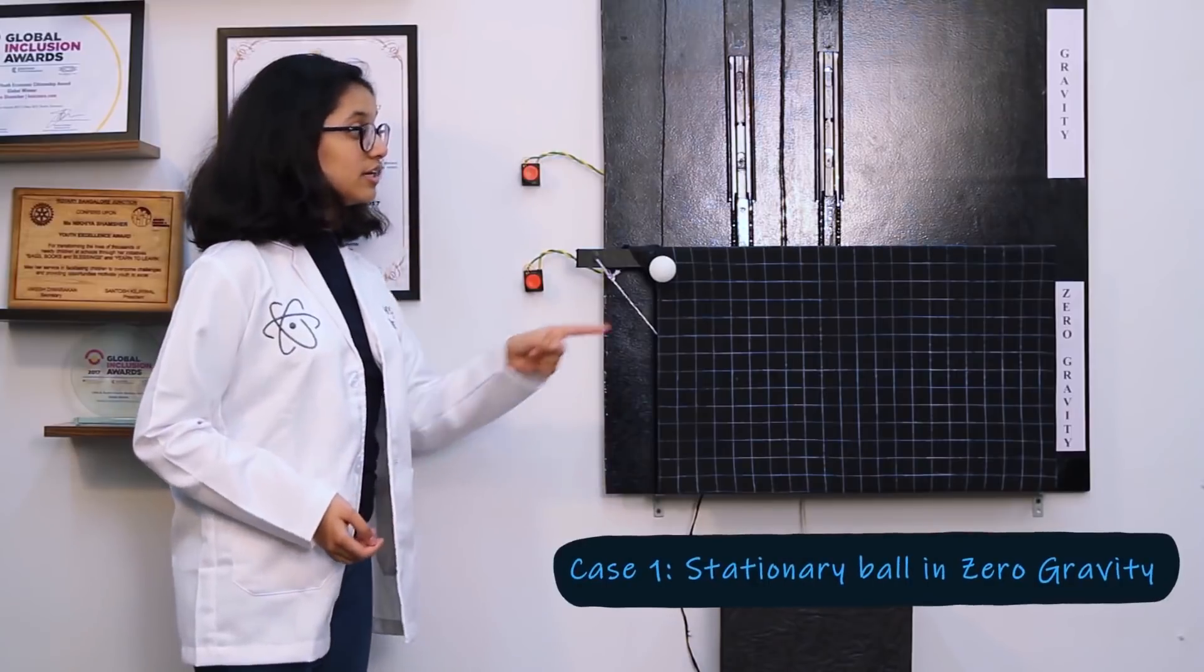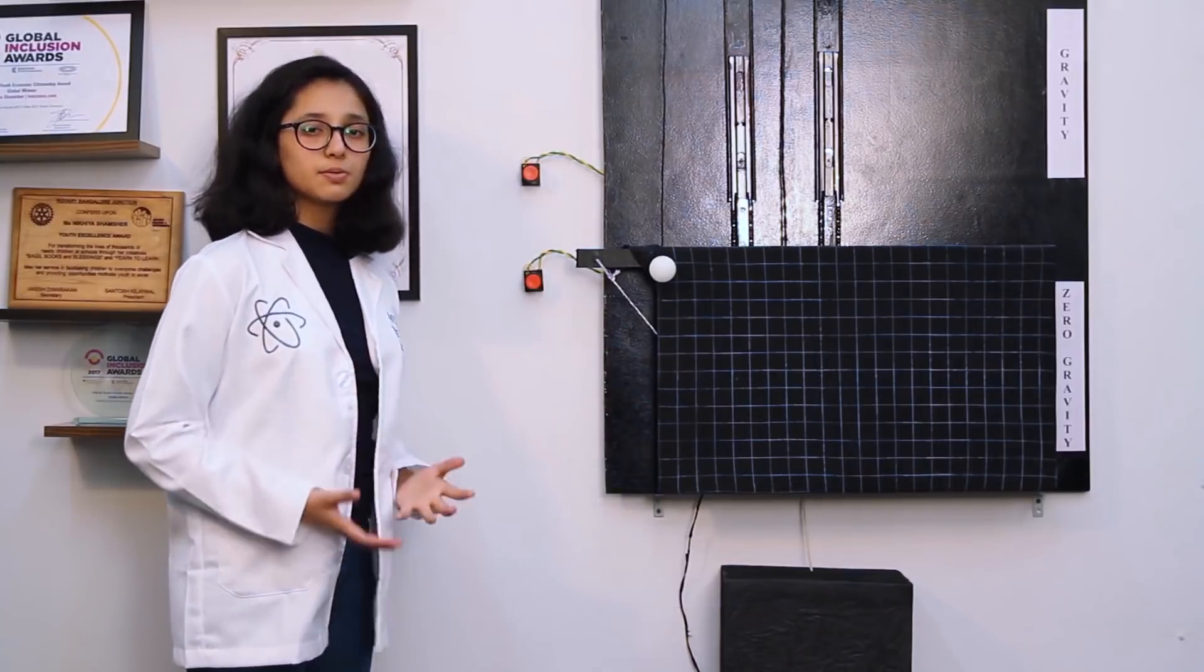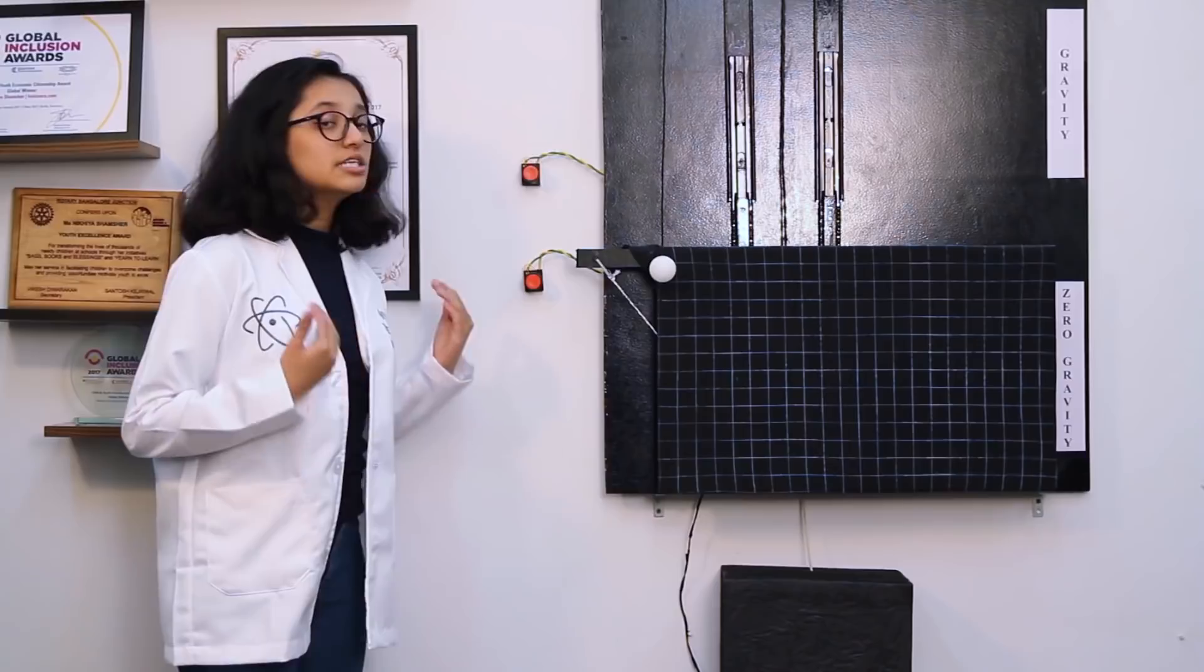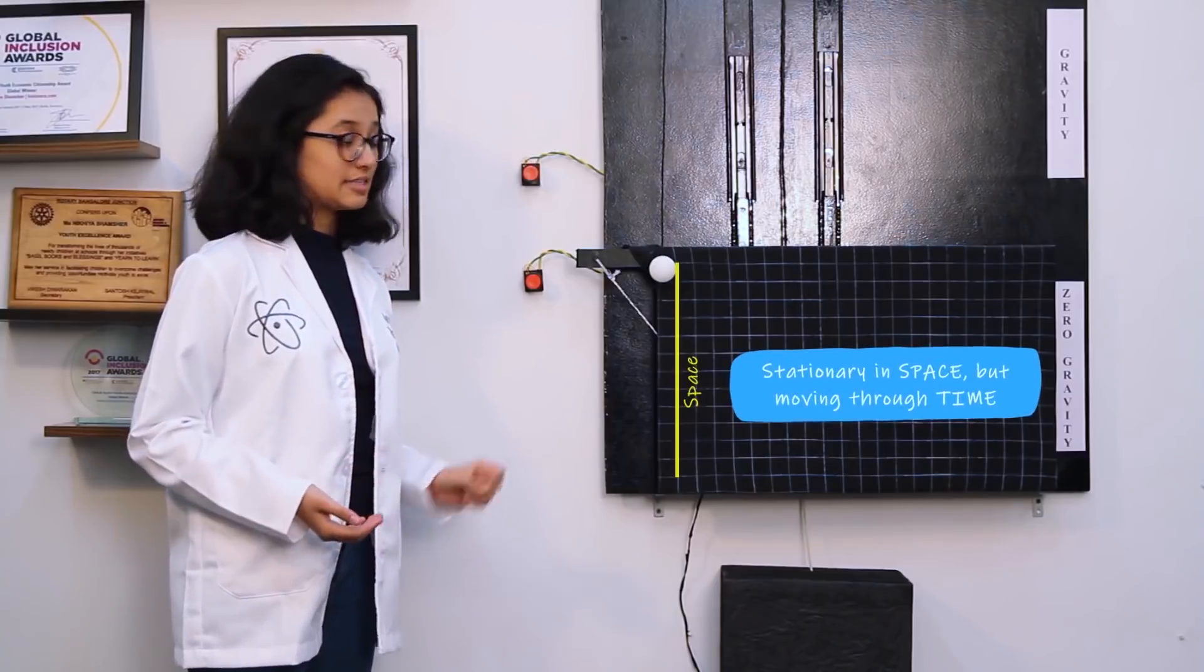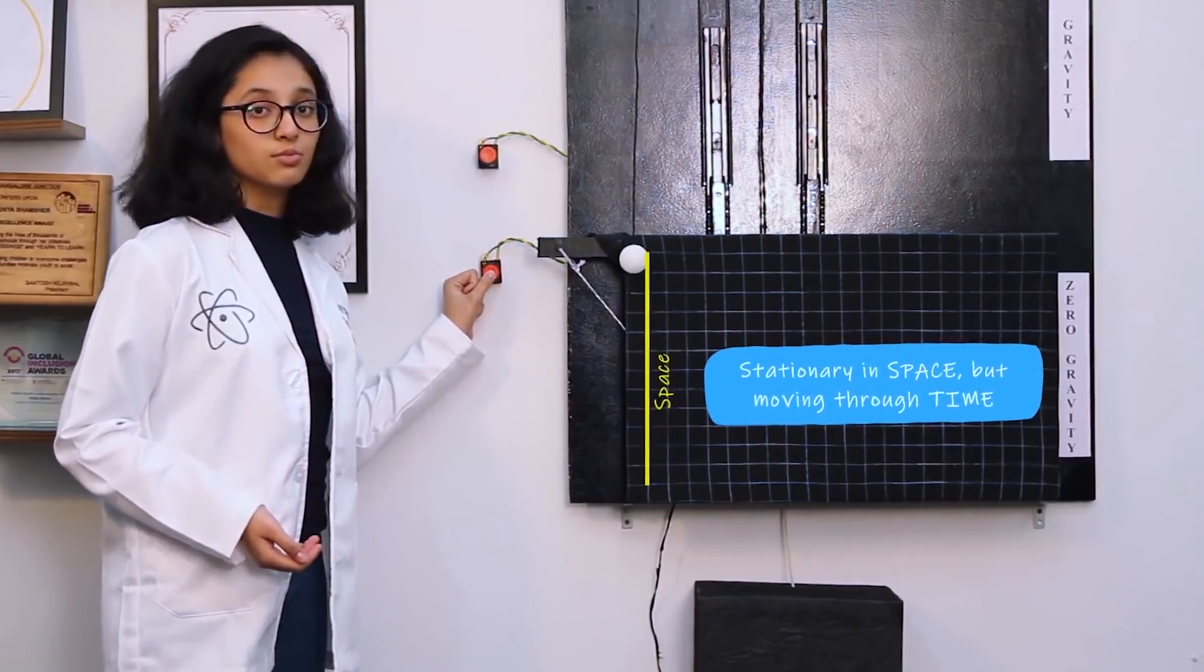Let's start with the stationary ball in zero-gravity. As per the laws of inertia, the ball continues to remain stationary in space, even though it's moving through time.